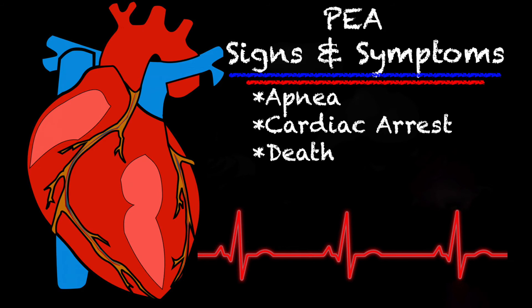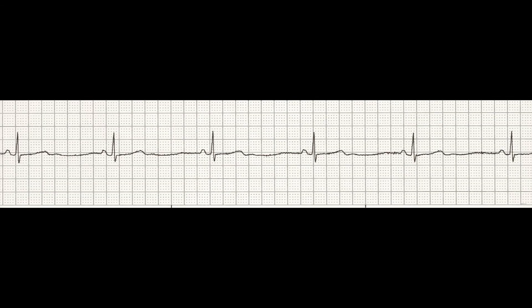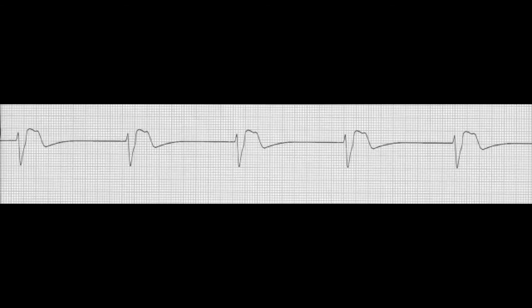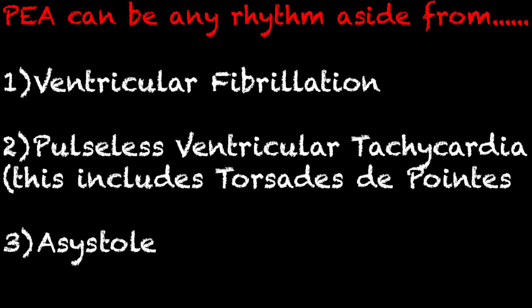Now let's go over some examples of PEA on a strip. Here's one example — no pulse. Here's another example — this patient had no pulse, but you can see some regularity to that rhythm. My point is none of these have a pulse. PEA can technically look like any rhythm aside from three specific rhythms: ventricular fibrillation, pulseless VTAC (which includes torsades), and asystole — these cannot be considered PEA. But other than that, if it's pulseless and there's a rhythm on the monitor, it's considered PEA.